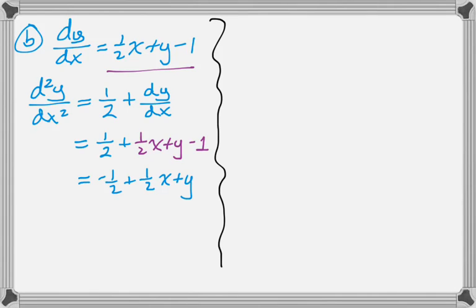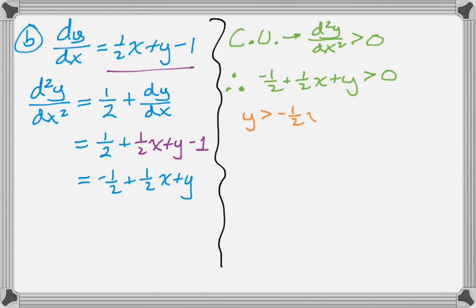Now the second part of the question is, where are the solution curves concave up? So that's when the second derivative is positive. So the second derivative being positive means that that thing I just got must be greater than 0. And that means that y is greater than negative 1 half x plus 1 half.